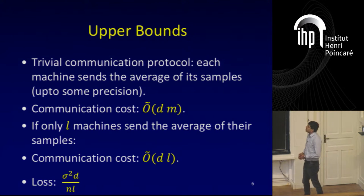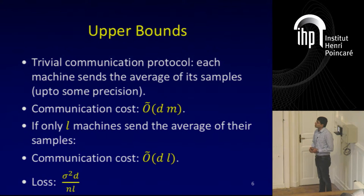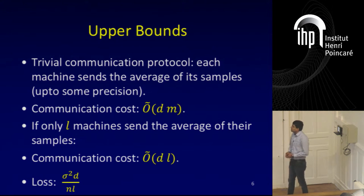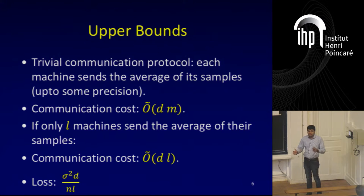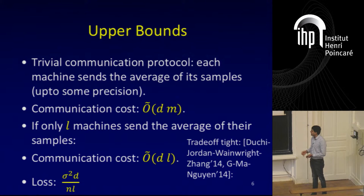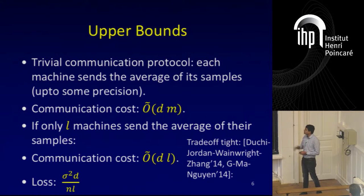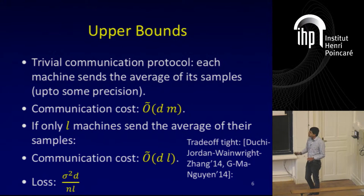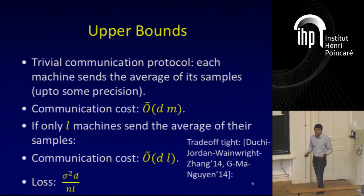Now suppose only l machines send the average of their samples. The communication cost is reduced to d times l, but the loss becomes sigma squared d over n times l since you only look at nl samples. This is a trade-off between loss and communication. Up to logarithmic factors, a paper of Duchi, Jordan, Wainwright and Zhang proved these trade-offs are tight — also proven in joint work with Ma and Nguyen. So this trivial protocol is essentially the best you can do for Gaussian mean estimation; the communication-loss trade-offs are tight.